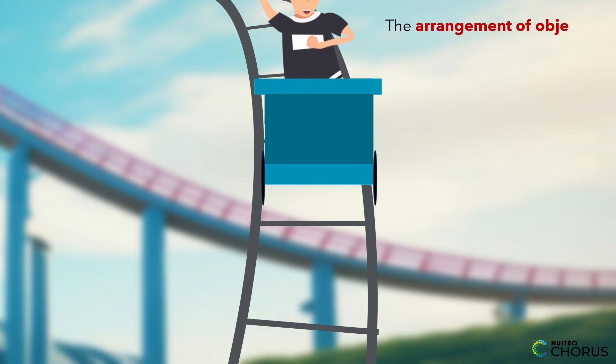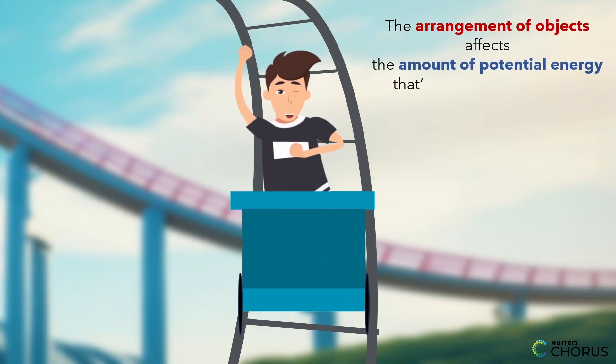So as the arrangement of objects—in this case, the roller coaster car and the track—changes, different amounts of potential energy are stored in the system.